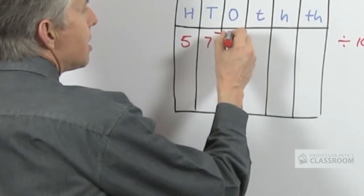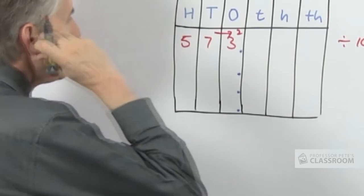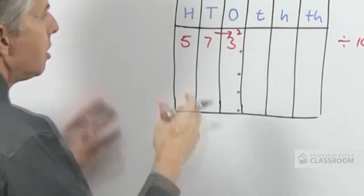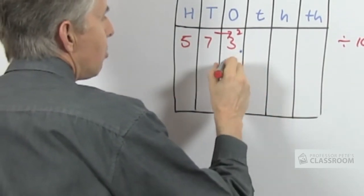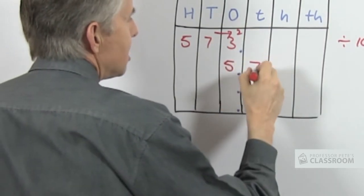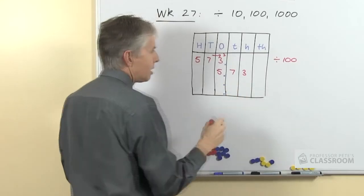So we're moving everything this way, 2 places. We might put an arrow with a number 2 next to it. Move everything 2 places. The 5, of course, will end up in the ones place, the 7 will be in the tenths, and the 3 will be in the hundredths.